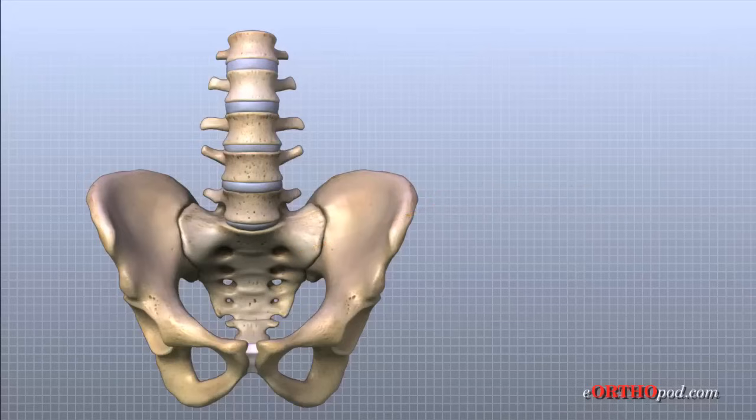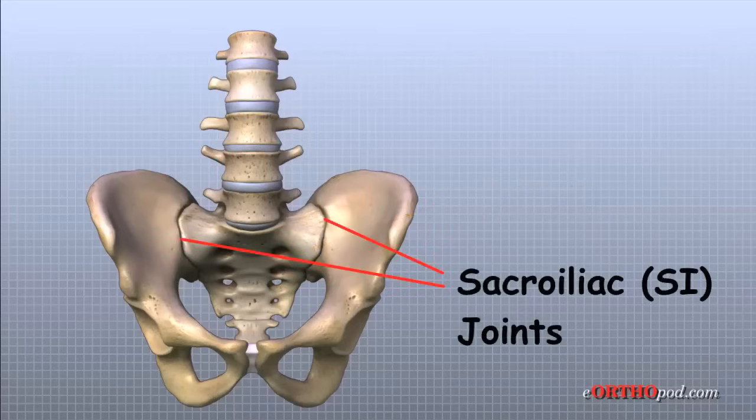There is a joint on each side of the sacrum that connects the sacrum to the pelvis. This joint is called the sacroiliac, or SI joint.